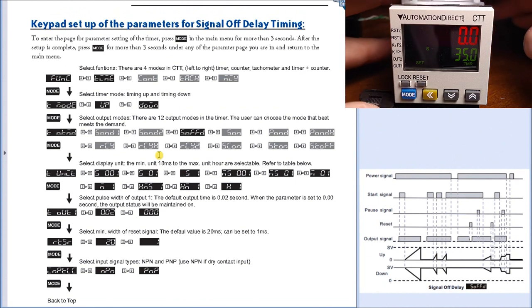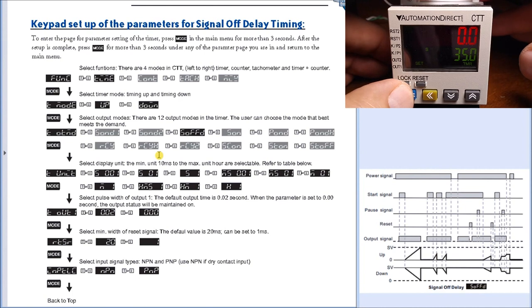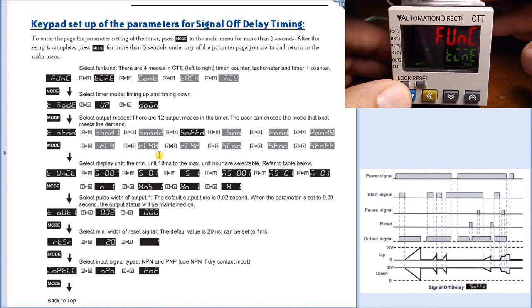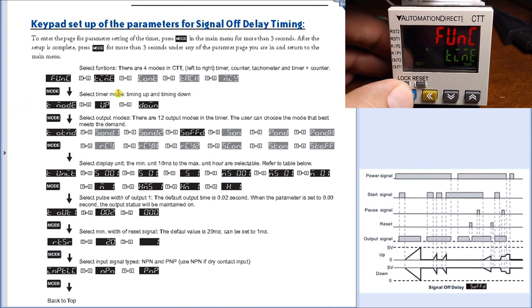And we'll hit and hold our mode key. When we do, we hit our function, and our function is now set for timer, which is correct. That's this one right here. Our next unit is our mode, which is set to up, which is okay. We could also set it for down, and we can see the values go from our set value down to zero, but we'll leave it as up.